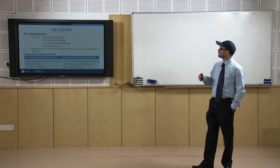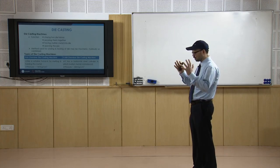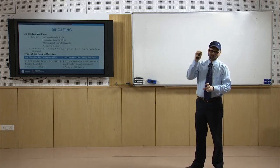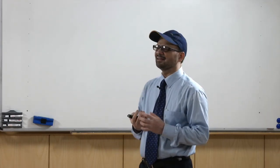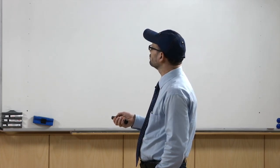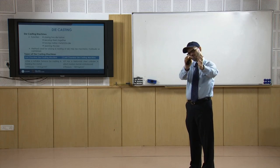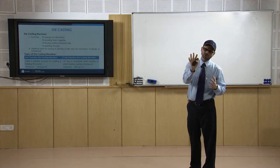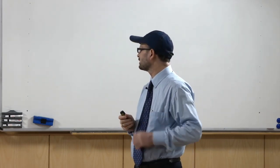In die casting, the two die halves are closed and secured together, then molten metal is forced into the die under pressure. Once solidification is ensured, the ejector die is opened and the casting is taken out. The method used for closing and locking the die may be mechanical, hydraulic, or a combination of both.